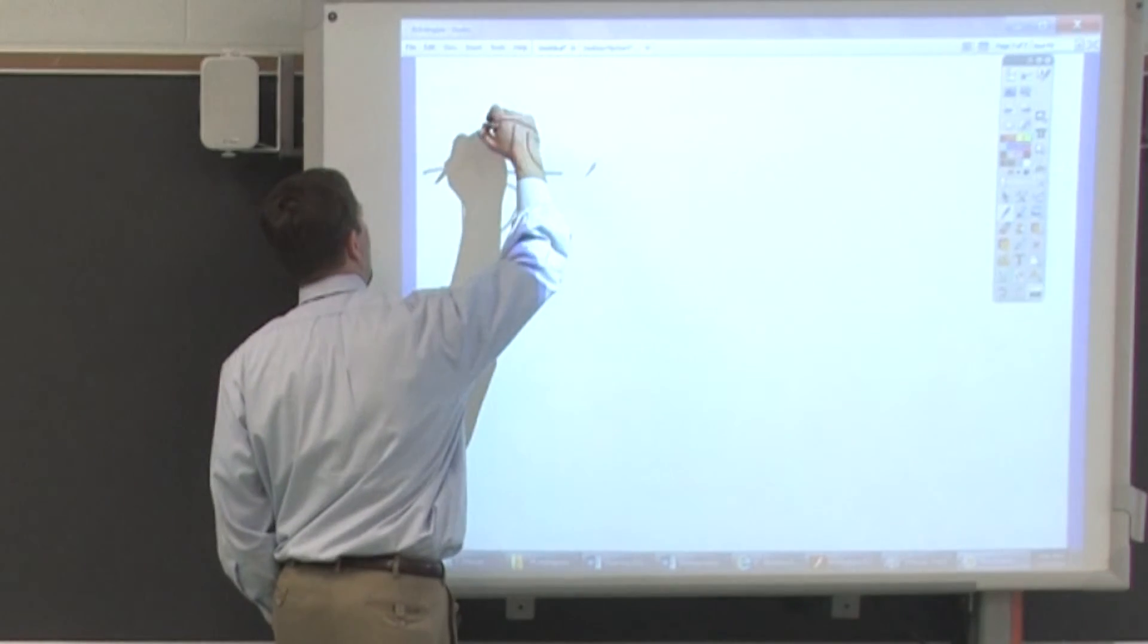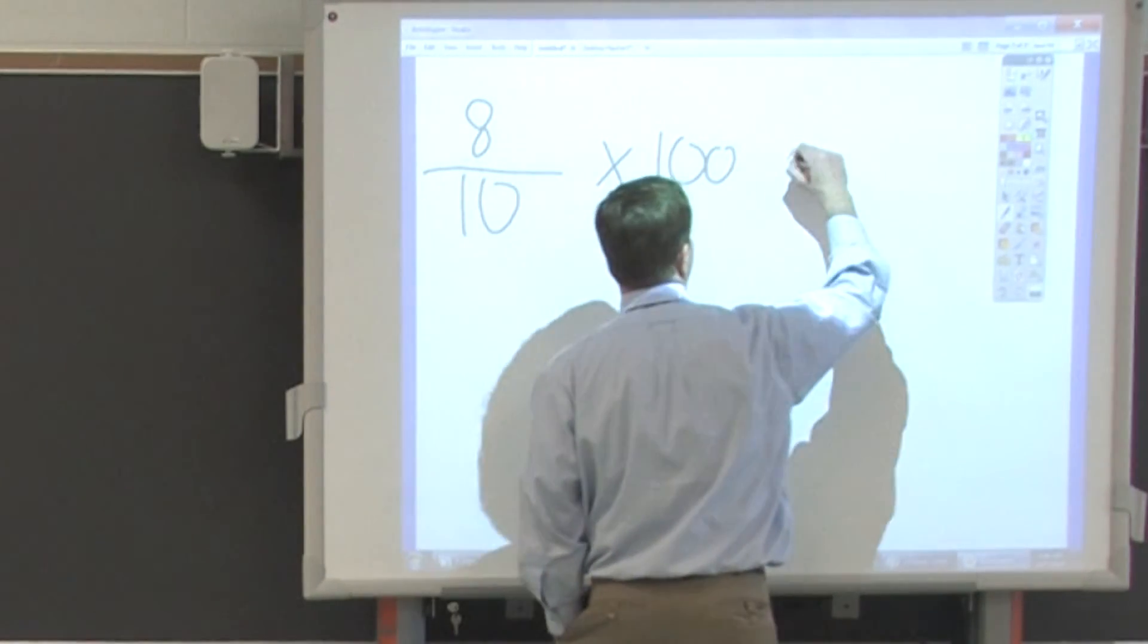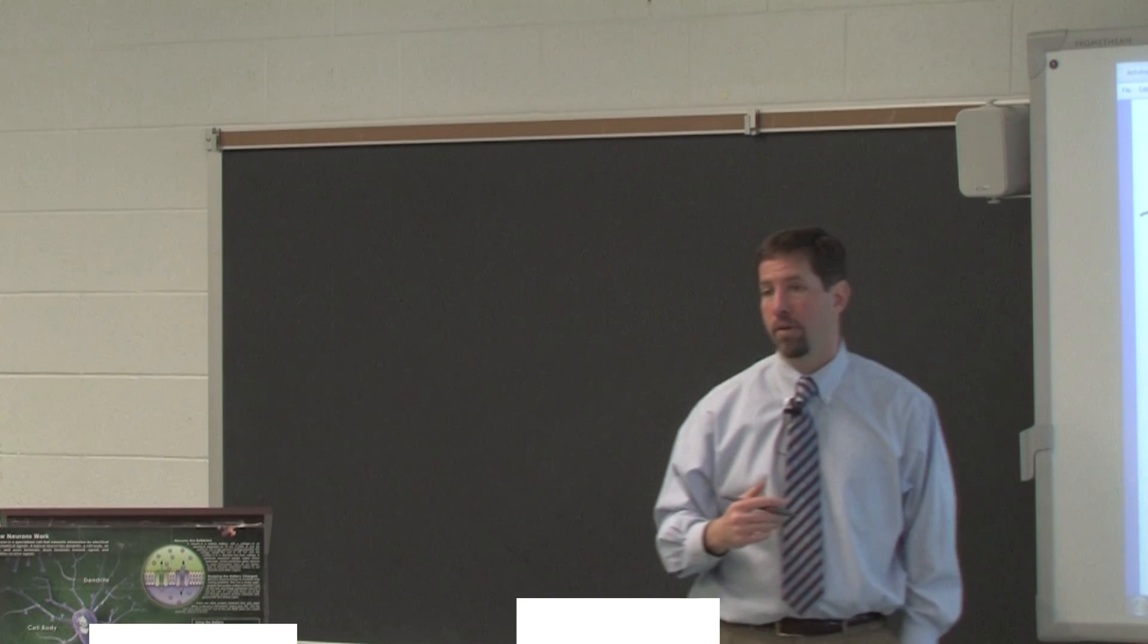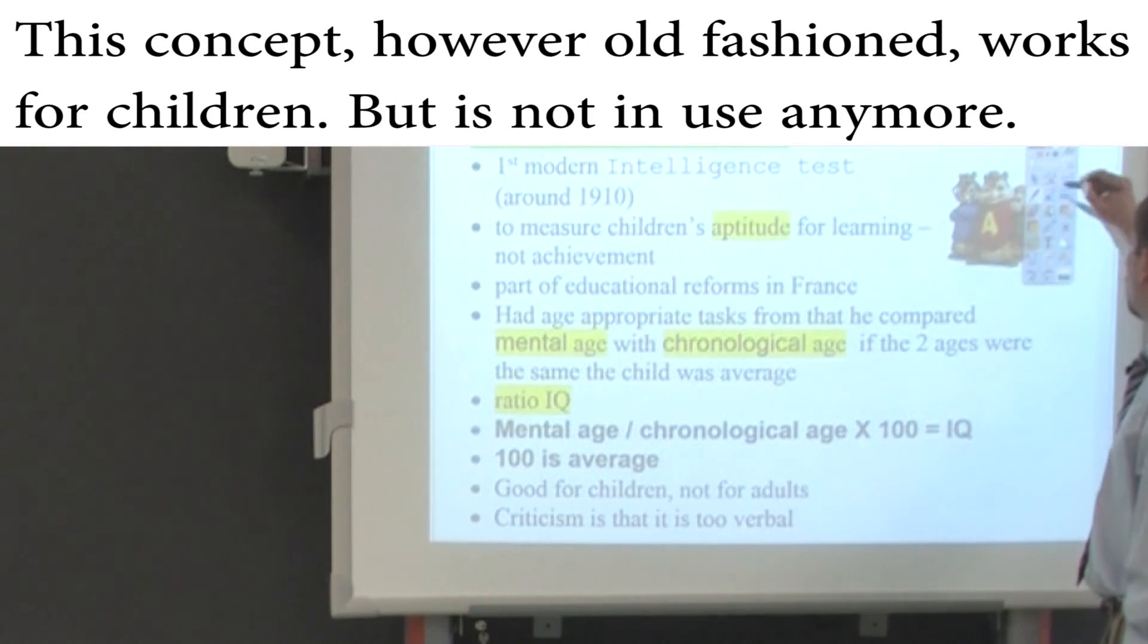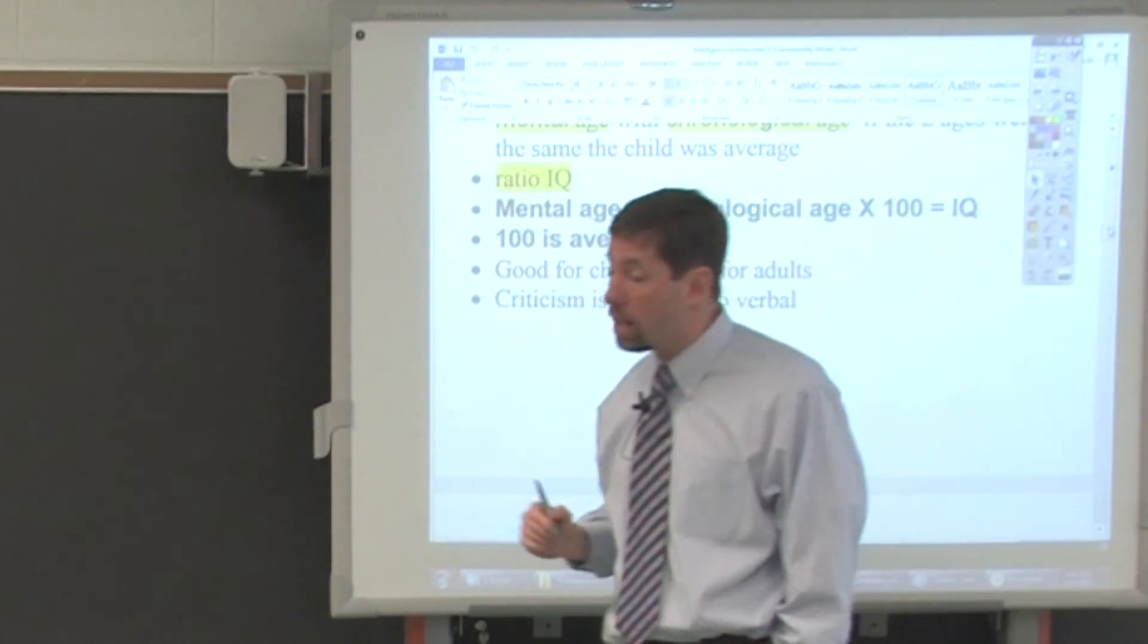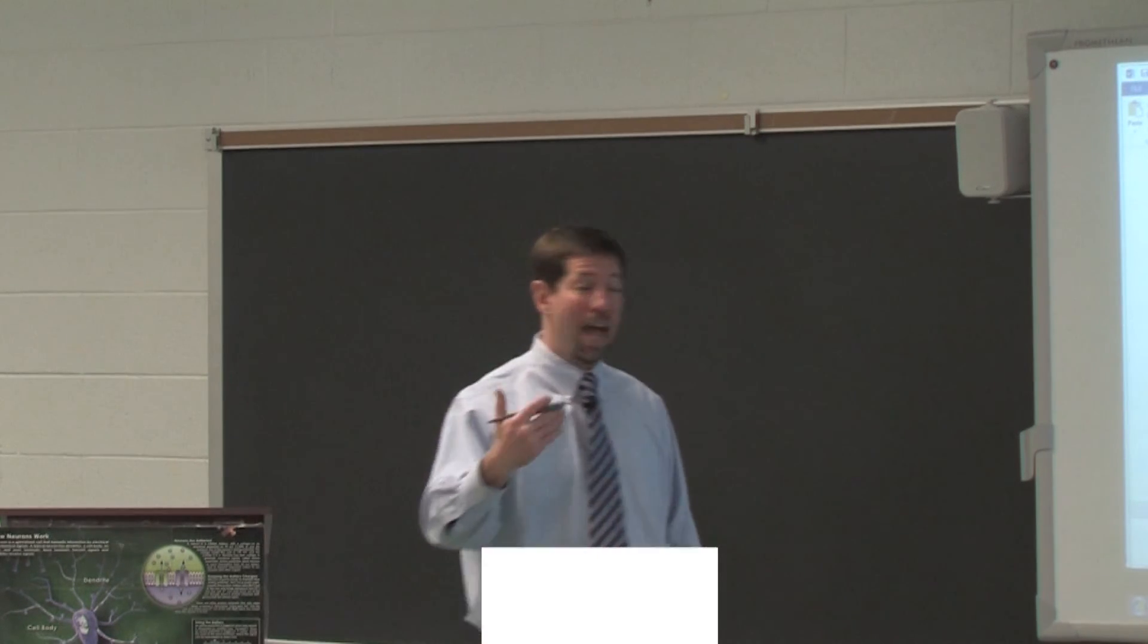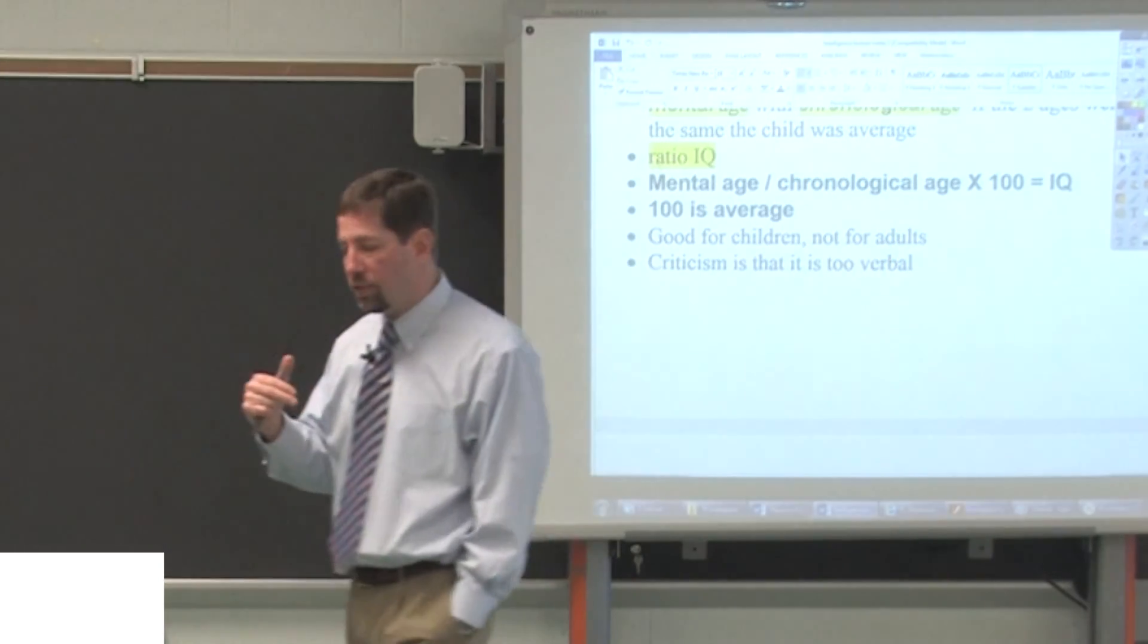Notice we talk about IQ. It's a quotient. You remember that if you multiply two things, you get a product. You add two things, you get a sum. You subtract things, you get a difference, you divide, you get a quotient. So you got little Tommy Thompson, ten years old. Ten-year-olds are supposed to be able to have a vocabulary of this. Maybe they're supposed to be able to do this many math facts in their head. However, Tommy Thompson can only do the things that an eight-year-old can do. You can do the math, eight divided by ten times a hundred equals Tommy's got an IQ of 80. You got a ten-year-old. They can do all the things of a twelve-year-old. You can do the math. So this works really well for children. This doesn't necessarily work well for adults. This is great for kids because there's a difference between a six-year-old and a seven-year-old. But I don't know if there's a difference between a 37-year-old and a 39-year-old. What's a 65-year-old supposed to be able to do that a 64-year-old can't do? You can see that breaks down as people get older. The first criticism is it's good for children, not for adults. The other criticism of this is it's too verbal.